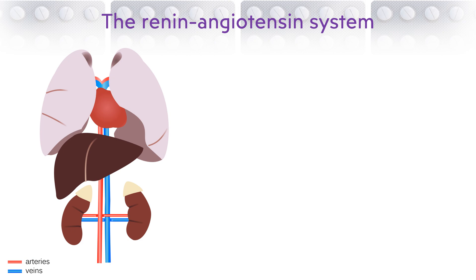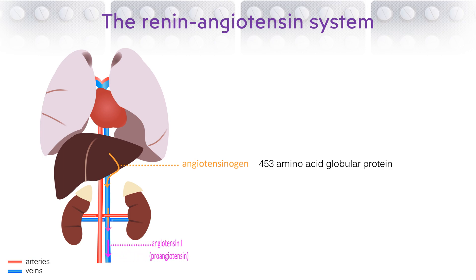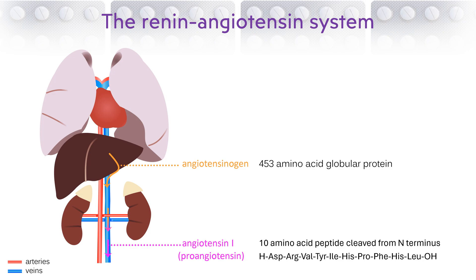The starting point is angiotensinogen, a large globular protein that is synthesised in the liver. As it circulates around the body, the N-terminus of the protein gets cleaved to release a short 10-amino acid peptide called angiotensin 1, also known as pro-angiotensin. The cleavage is catalyzed by an enzyme made in the kidney called renin. The more renin is secreted into the blood, the more circulating angiotensinogen will be cleaved. Factors that influence the amount of renin secreted include blood pressure, the sodium concentration in plasma, and the sympathetic nervous system.